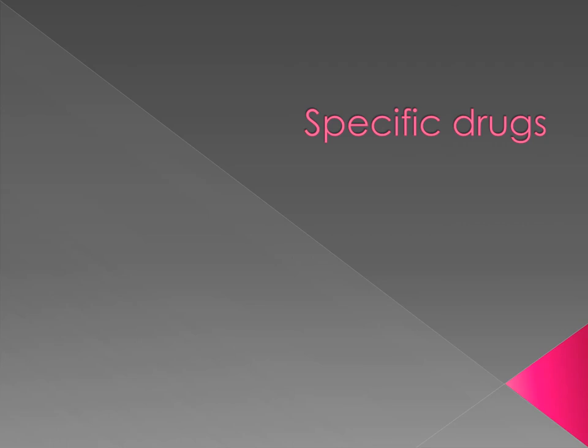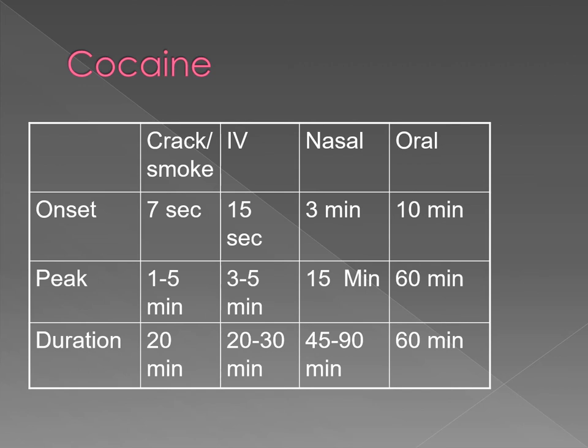Cocaine can be smoked as crack, injected, eaten, or snorted. The different routes of ingestion have different times of onset, peak effects, and duration. The quickest onset is when you smoke crack.